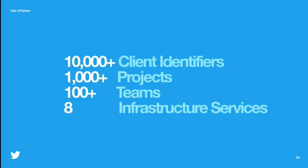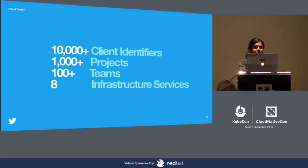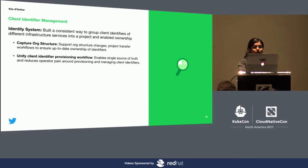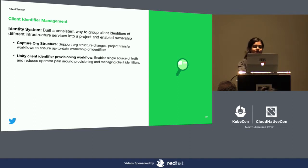We started working on this in Q4 of last year and as of today, we have integrated with eight infrastructure services, aggregated 10,000 identifiers, and created over 1,000 projects used by over 100 teams. The Kite V1 UI serves as a single pane of glass and allows every engineer in the company to manage their projects and client accounts for infra services and acquire quota for Aurora. Chargeback exposed us to the difficulty around creating and managing ownership of client identifiers per infrastructure. One of the things we focused on with Kite early on is building an identity system that explicitly captures org structure and exposes teams.